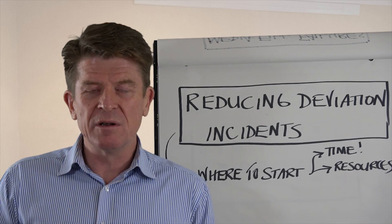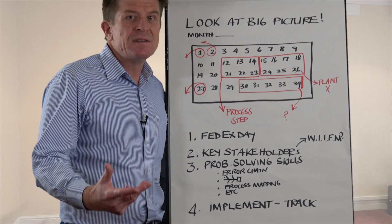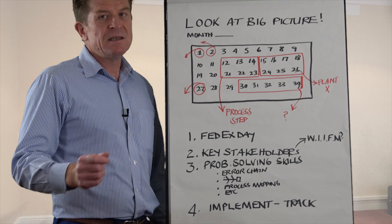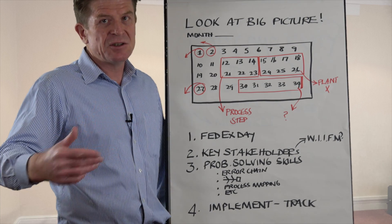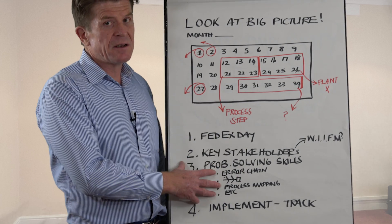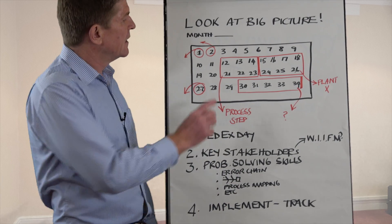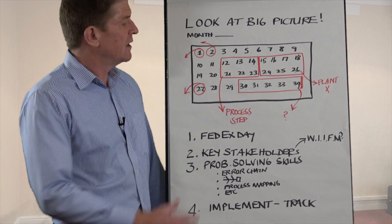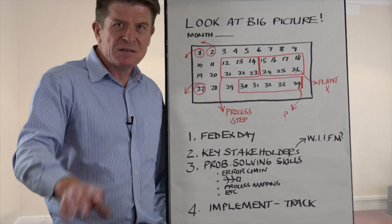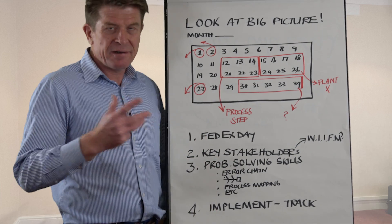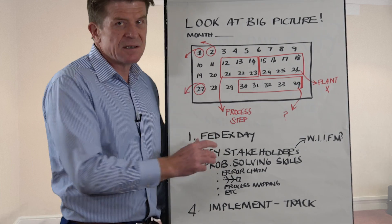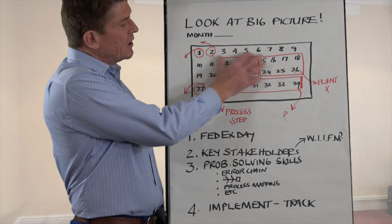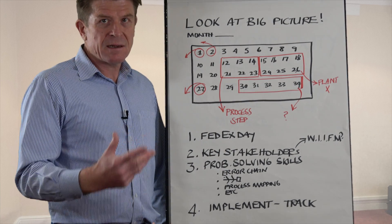Instead of treating each incident separately, the idea is to tackle groups of deviations and hit them all at the same time. If you really want to drive down the numbers of deviations as quickly as possible — and very few companies have the time and resource to investigate each and every incident effectively — I'd encourage you to take a step back and look at the big picture. Certainly some deviations immediately stand out as major and warrant a detailed individual team-led investigation, but in most cases, most other incidents are of lesser significance. What I'd really encourage you to do is to look for patterns and look for clusters.